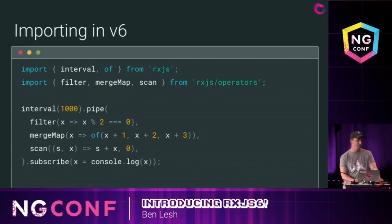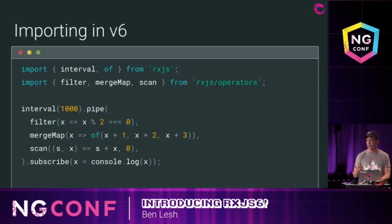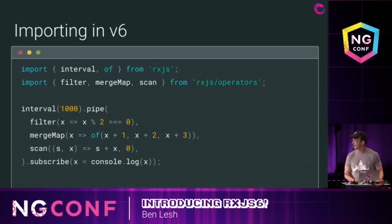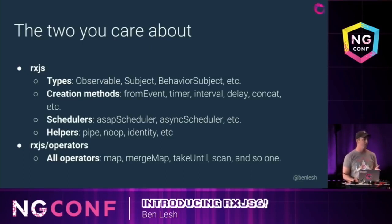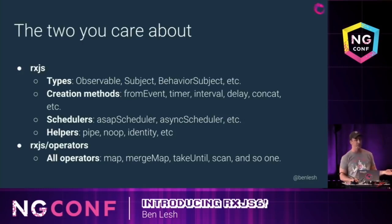In RxJS version 6, there are roughly two import paths you'll care about as an Angular developer. You'll import everything that is a type, a scheduler, or a helper from 'rxjs', and all of the operators get imported from 'rxjs/operators'. Basically anything that's not an operator comes from 'rxjs', and all of the operators that you would pass to pipe come from 'rxjs/operators'.